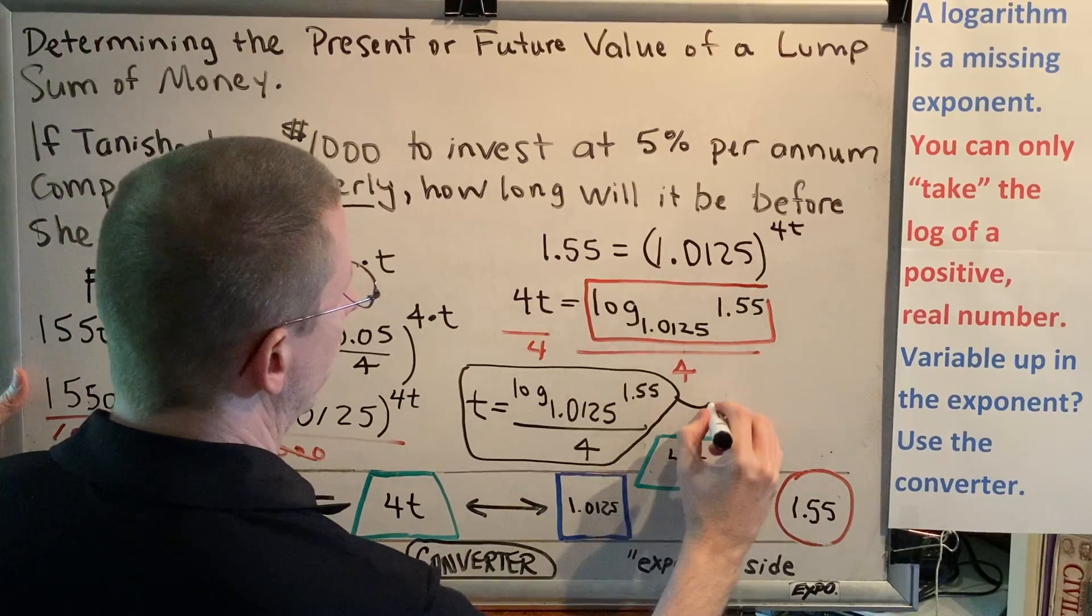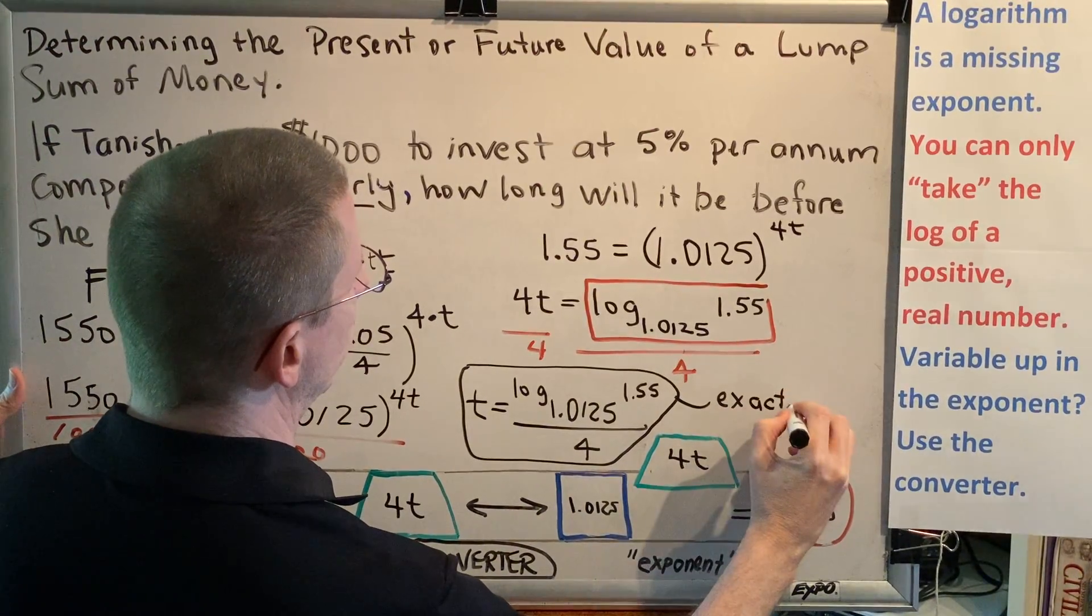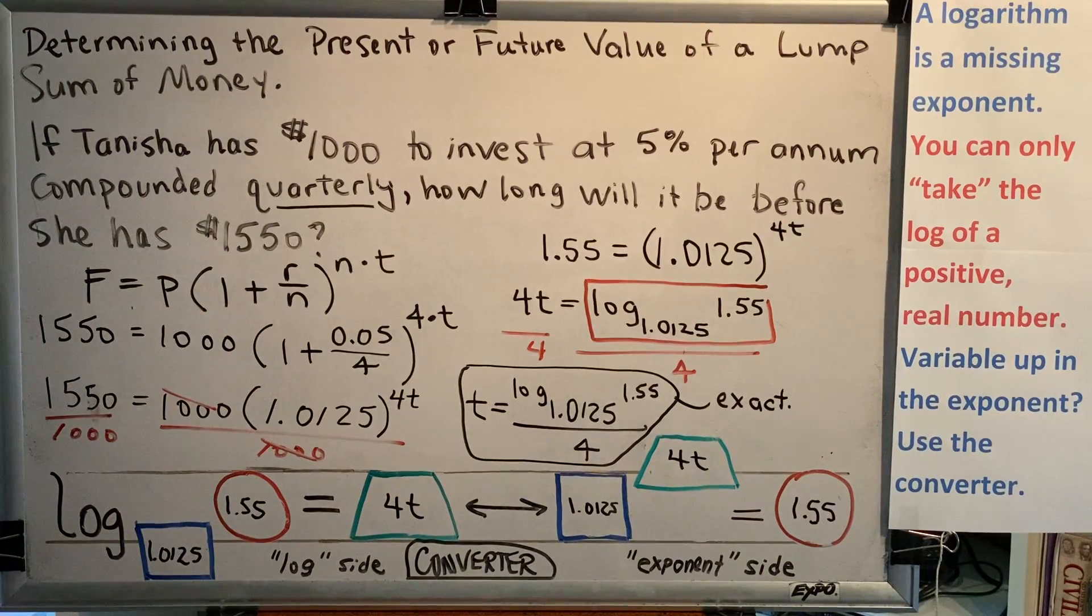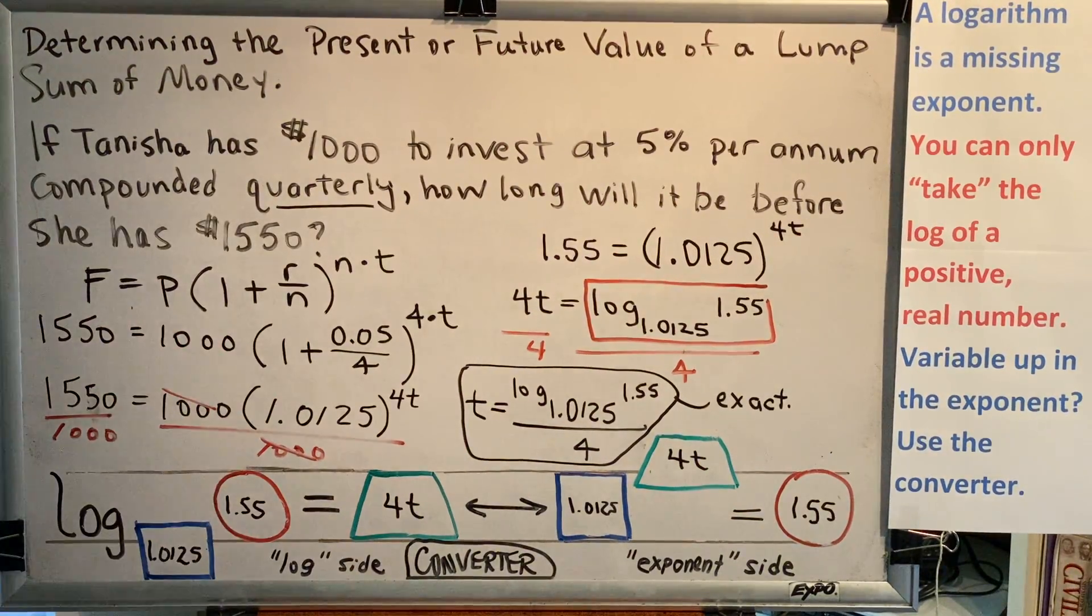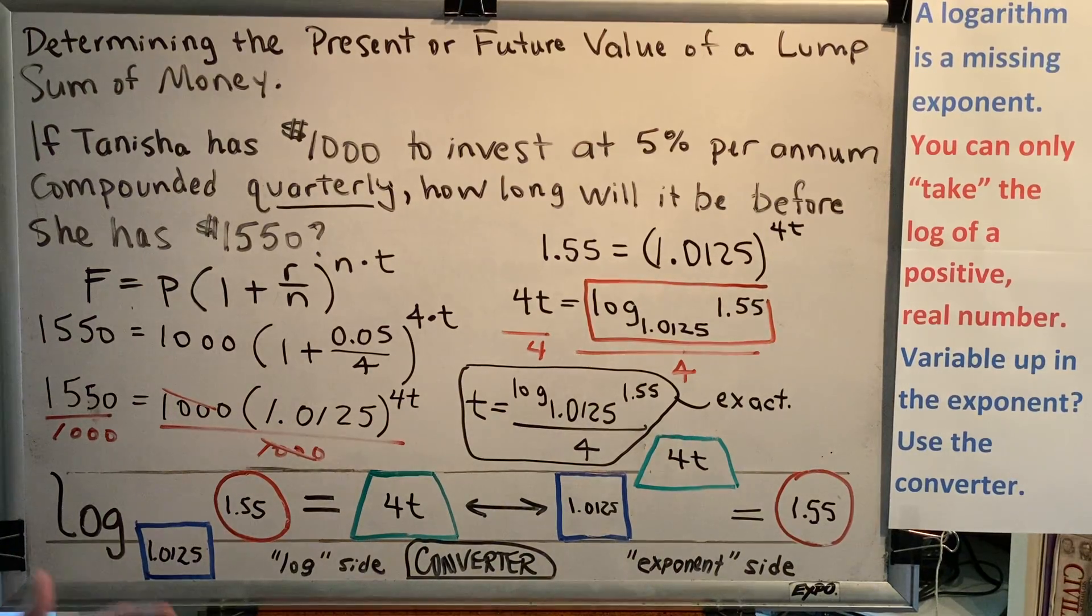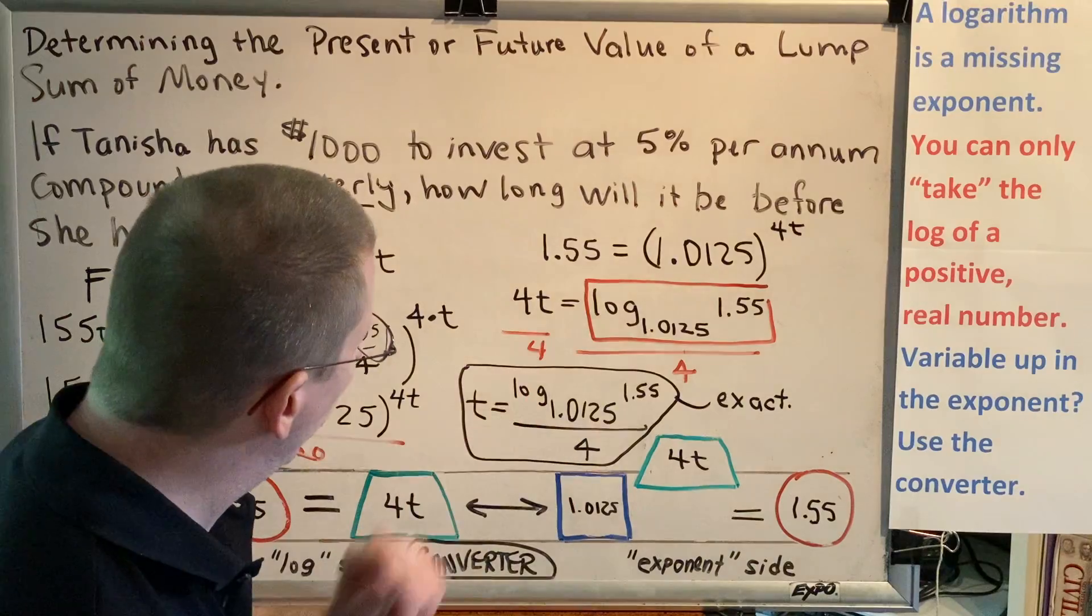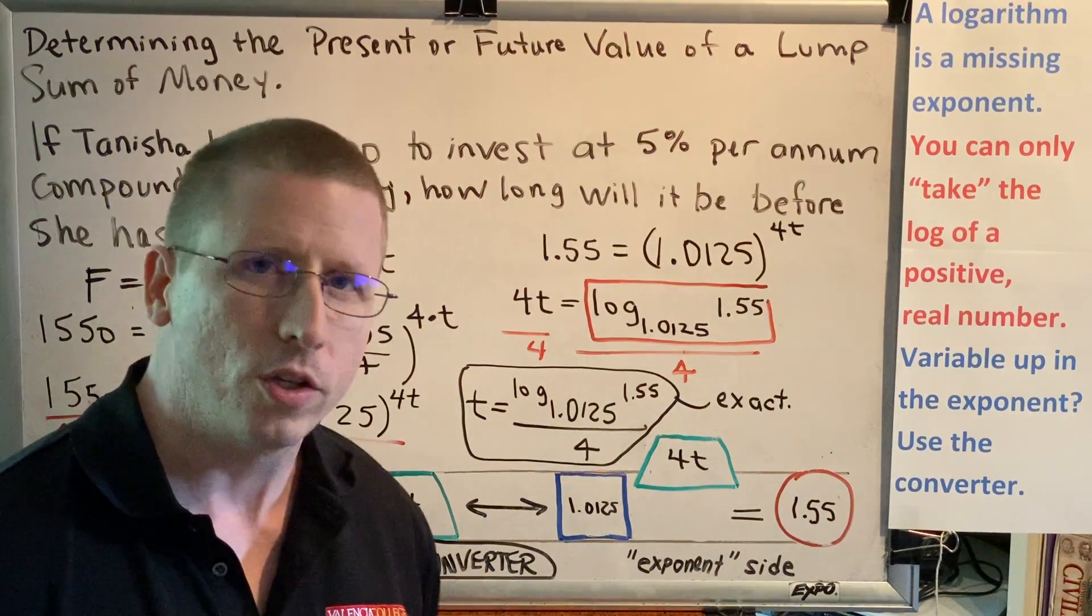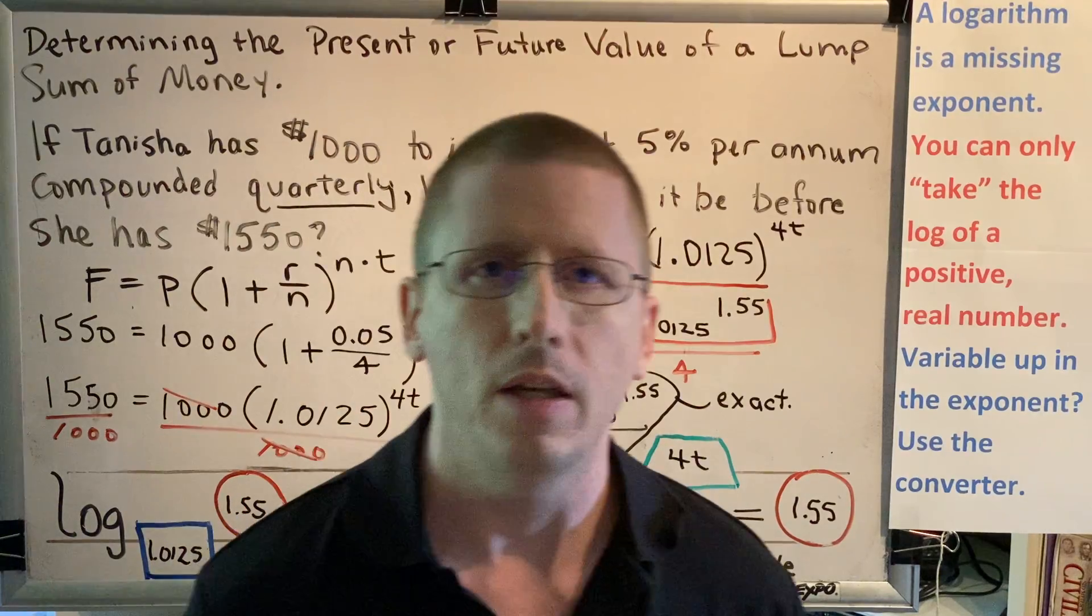Now this is the exact answer, but I want you to imagine a situation. Pretend for a moment that you're Tanisha. You go into the bank with your $1,000, you choose an account, and you ask the person, How long will I have to wait until my $1,000 turns into $1,550? And they look right at you and they say, You just have to wait log base 1.0125 of 1.55 all divided by 4 years.